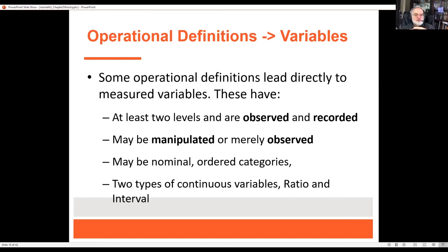Some operational definitions lead to variables. All variables have at least two levels and are observed and recorded; they can be manipulated or merely observed. A manipulated variable is one you assign to people — I'm going to put you in the fun instructor class, or the instructor who just goes through PowerPoint presentations. Merely observed variables are ones I look at but do not have control over — like if I asked how you felt about today, I'm merely observing it.